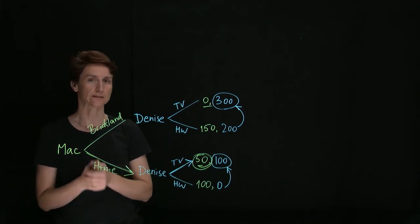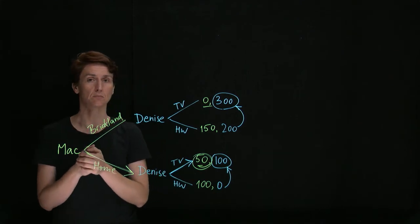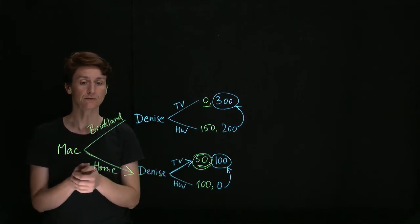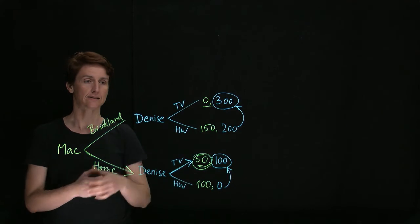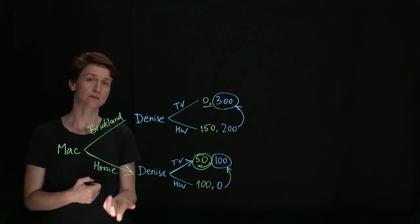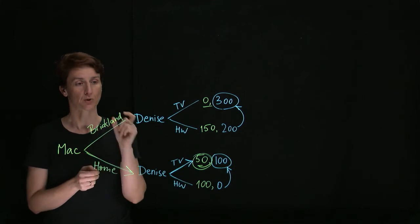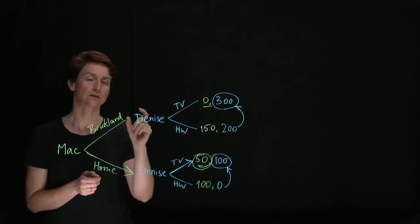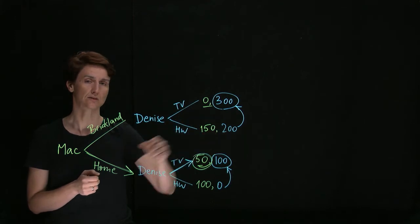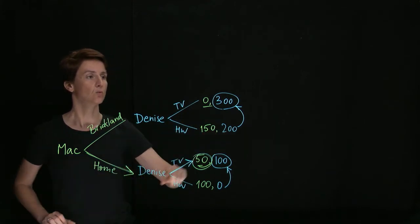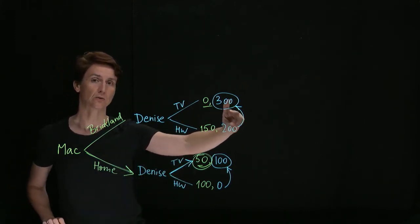One way we could think of doing that is by using that promise itself. So if Mac and Denise expect to interact again in similar circumstances, then having a promise associated with her commitment to do a certain thing will change these payoffs in the following way.